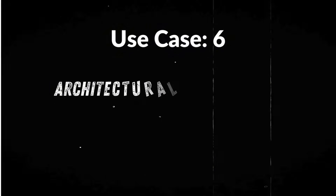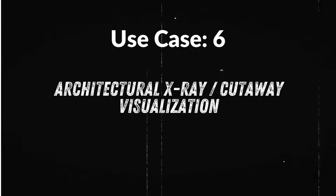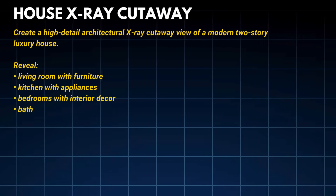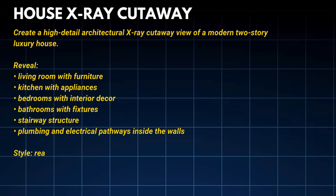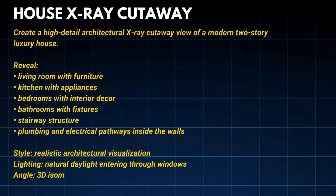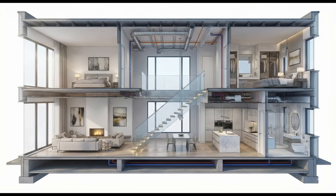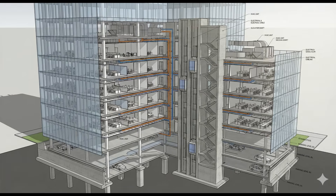Use case 6: Architectural x-ray and cutaway visualization. Prompt: 'Create a high-detail architectural x-ray cutaway view of a modern two-story luxury house — reveal the living room with furniture, kitchen with appliances, bedrooms with interior decor, bathrooms with fixtures.' This looks like something created in professional architectural visualization software — you can see the living room layout, the kitchen appliances, even the internal plumbing and electrical paths. The next prompt covers an x-ray cutaway view of a 20-story modern glass office tower, which is logical structural visualization.